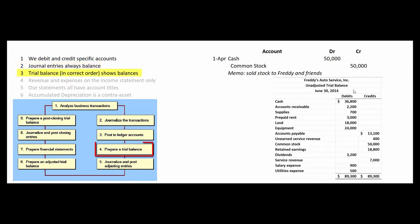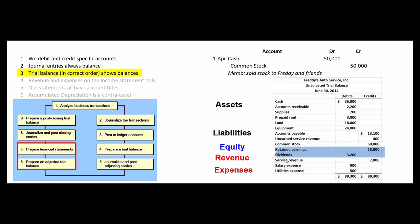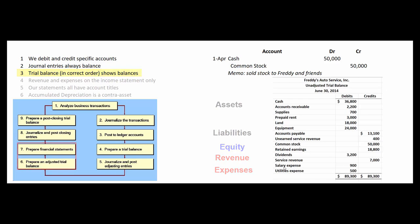As part of the accounting cycle, we prepare a trial balance to make sure all our debits equal all our credits, and after we make adjusting journal entries, we prepare an adjusted trial balance. In both cases, the accounts must be listed in a special order: assets, liabilities, owner's equity, revenue, and expenses. That's because we'll use the adjusted trial balance to create our financial statements — starting with the income statement, then the statement of retained earnings, then the balance sheet. So we always list accounts in that special order.